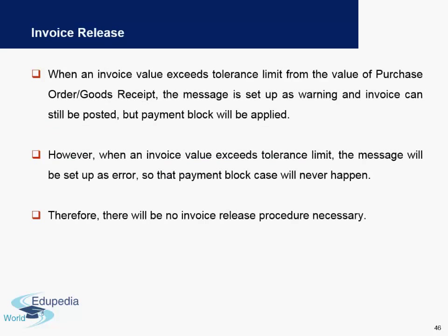Next is invoice release. When the invoice value exceeds a tolerance limit from the value of the purchase order, a warning message is set up and the invoice can still be posted, but a payment block is applied. This is to avoid any confusion or duplication so that the accounts payable analyst can check why there was a difference between the invoice value and the purchase order value.